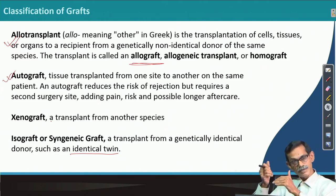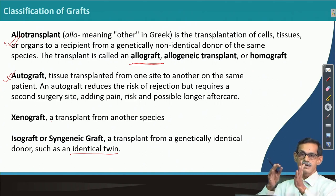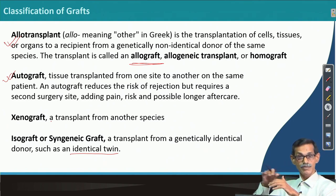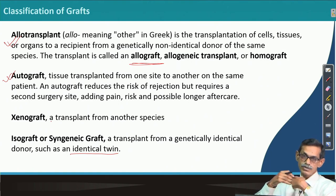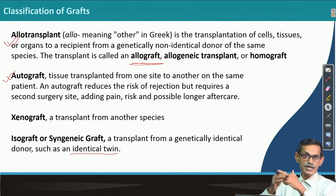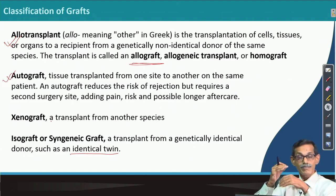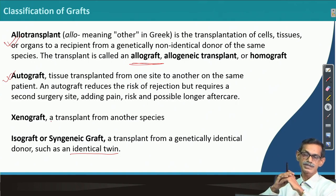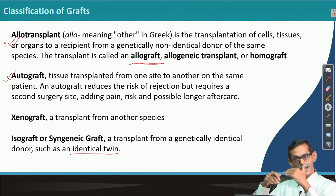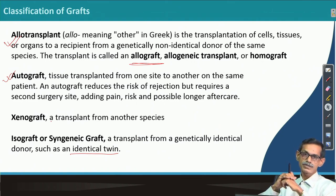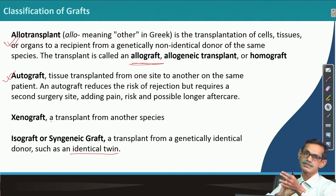Another approach is tissue engineering — getting cells from an individual and making the tissue in the lab so that organ can be transplanted. If we can make a liver from my liver cells or stem cells in a laboratory, that liver will be almost identical to mine. Research on artificial skin development is well advanced; skin very close to our own skin has already been developed in the laboratory from a patient's own cells.